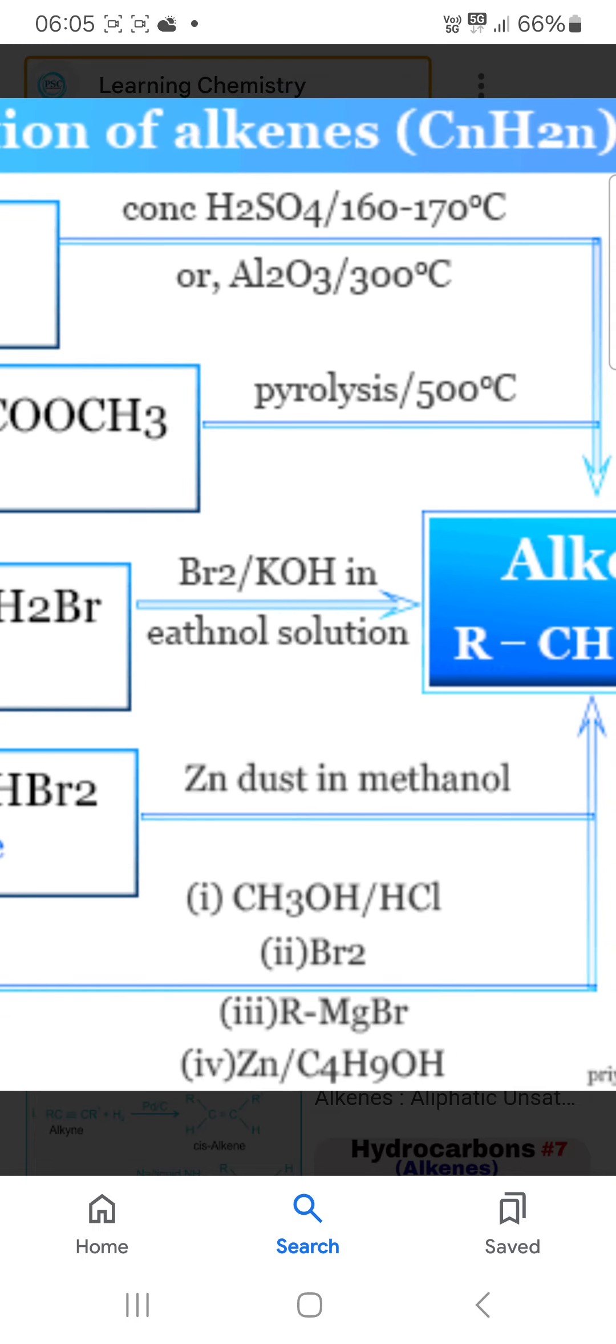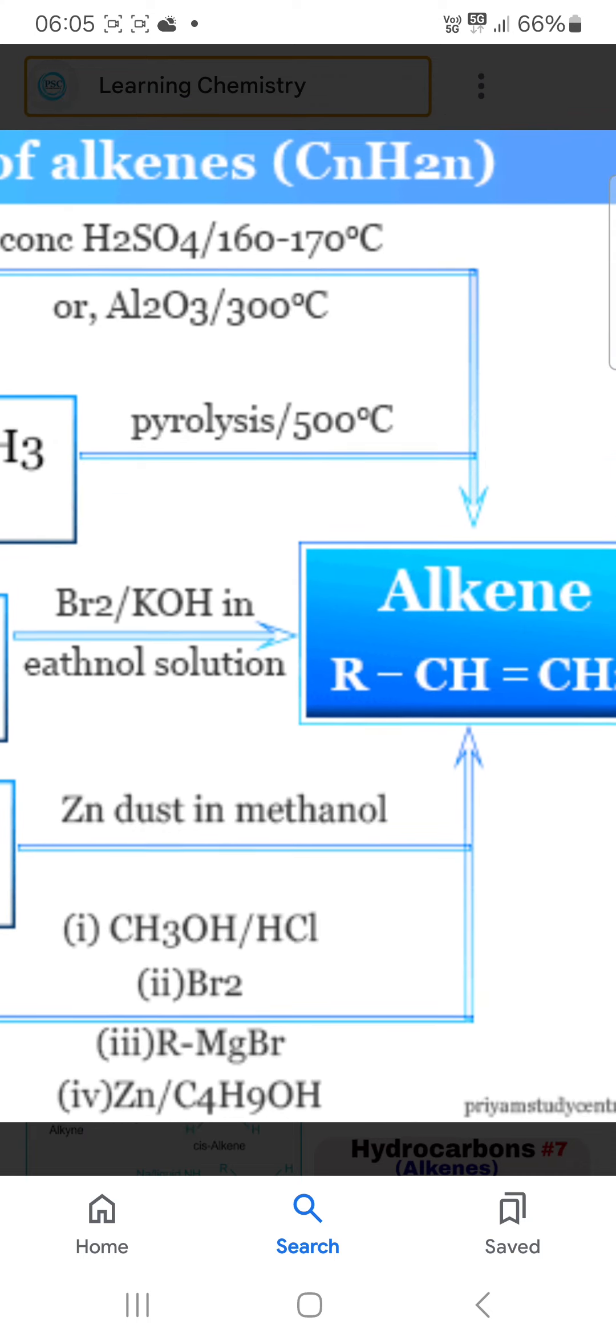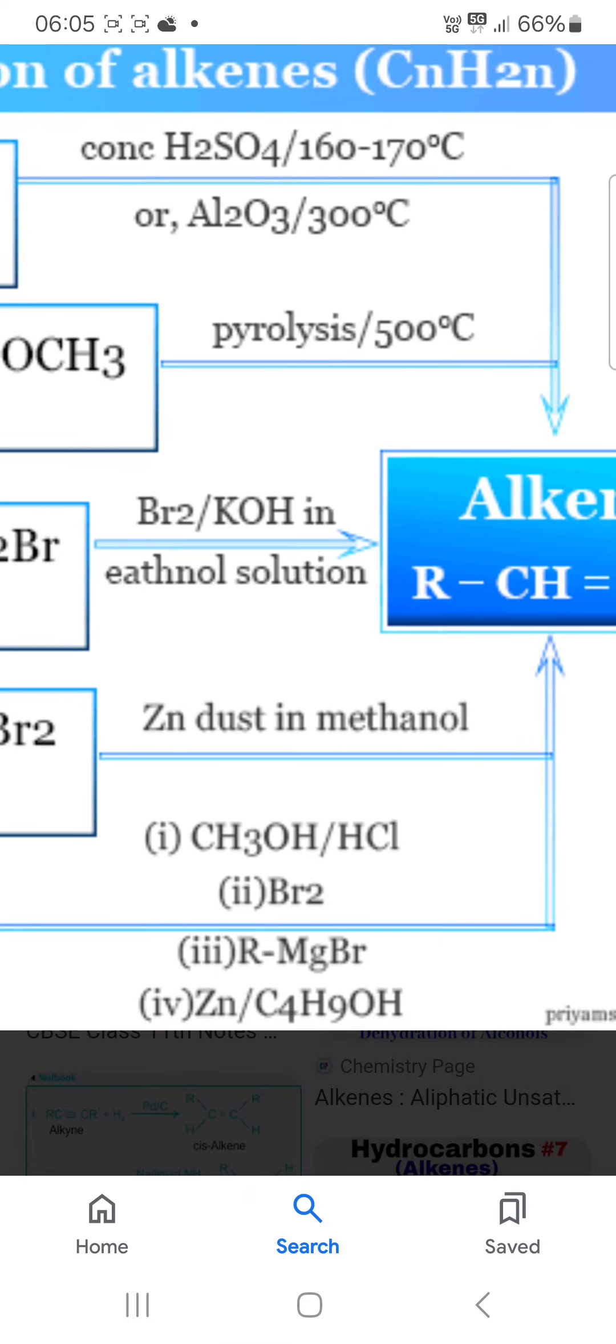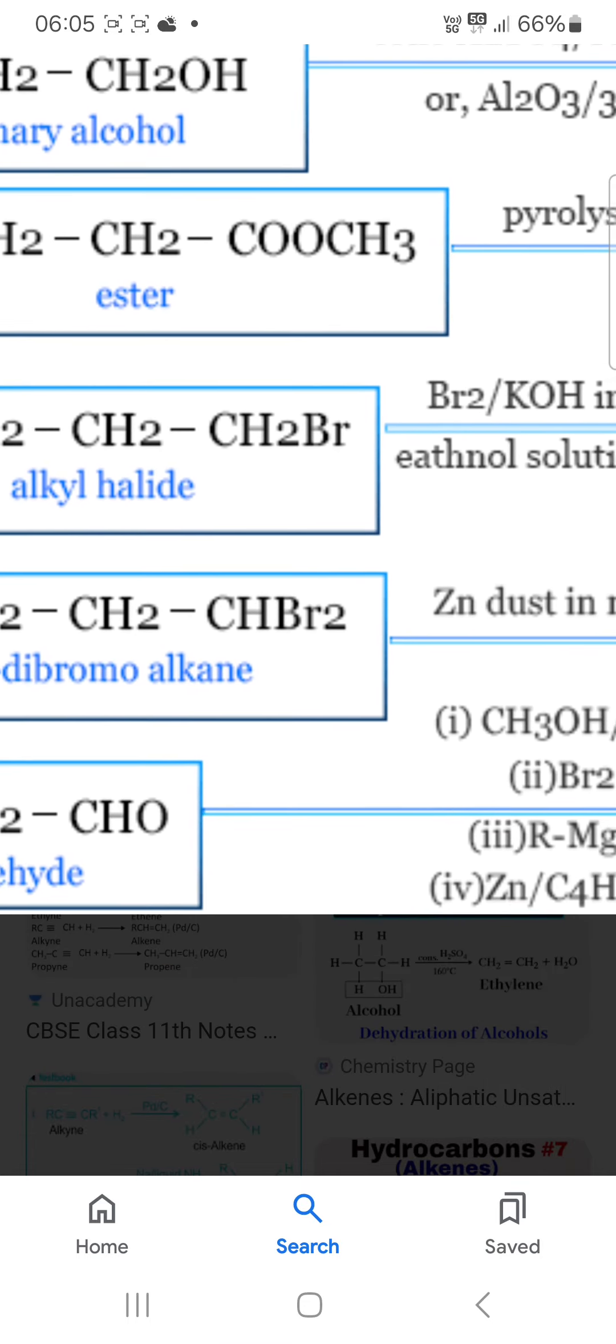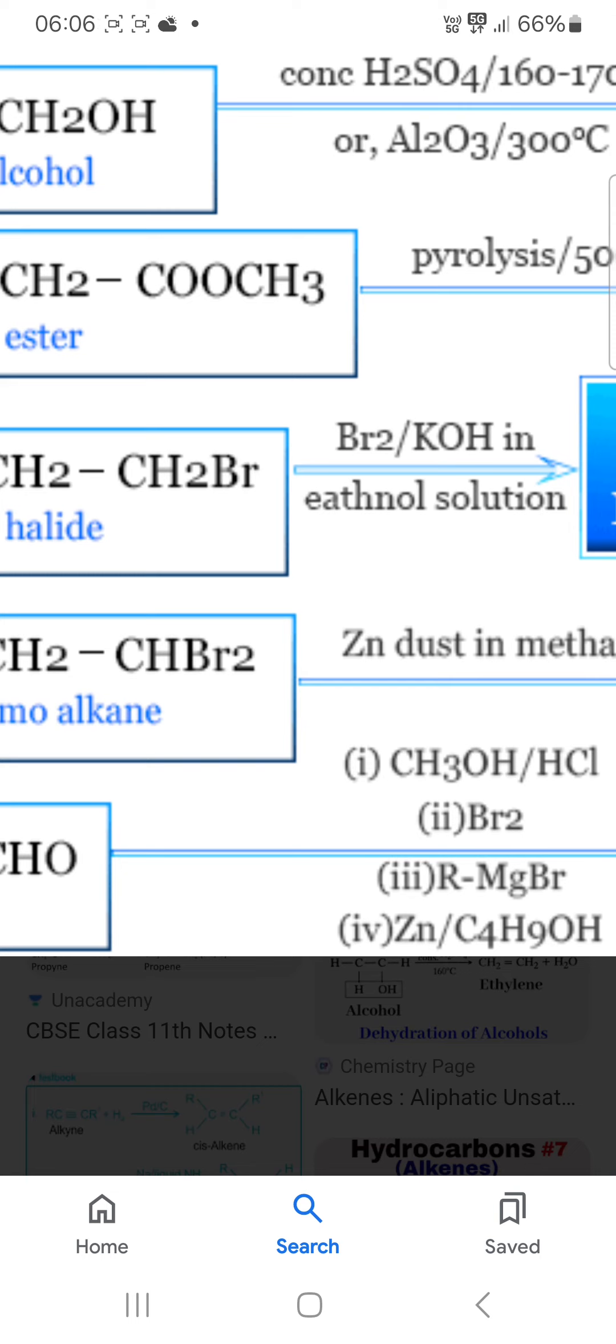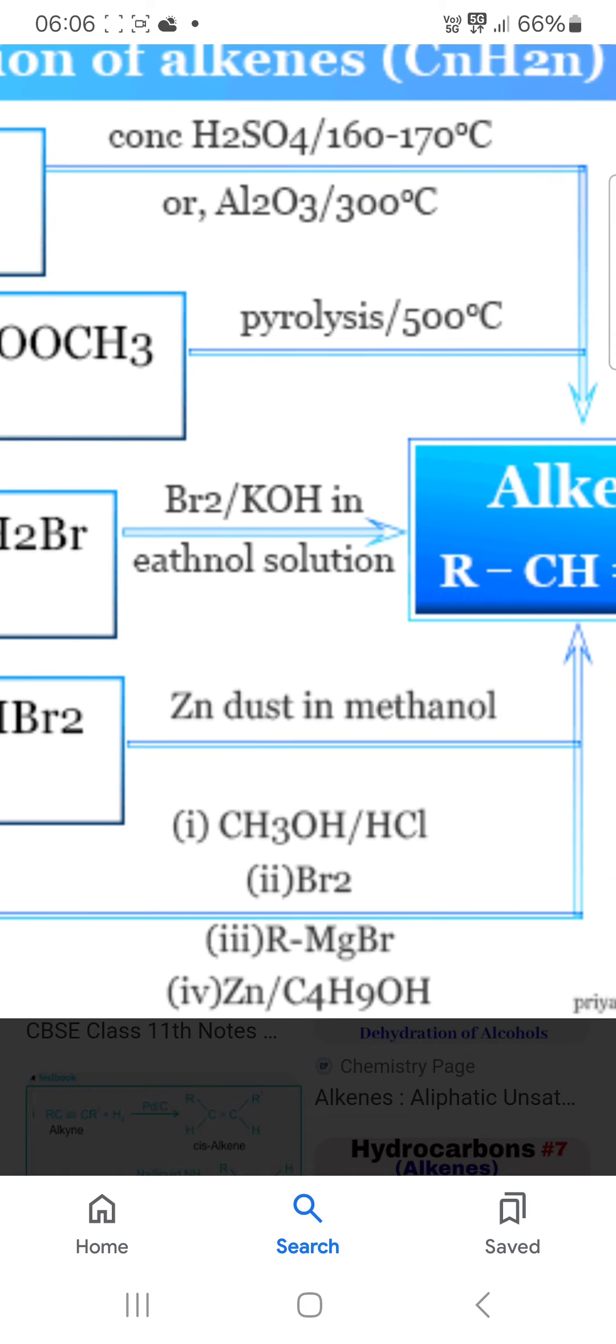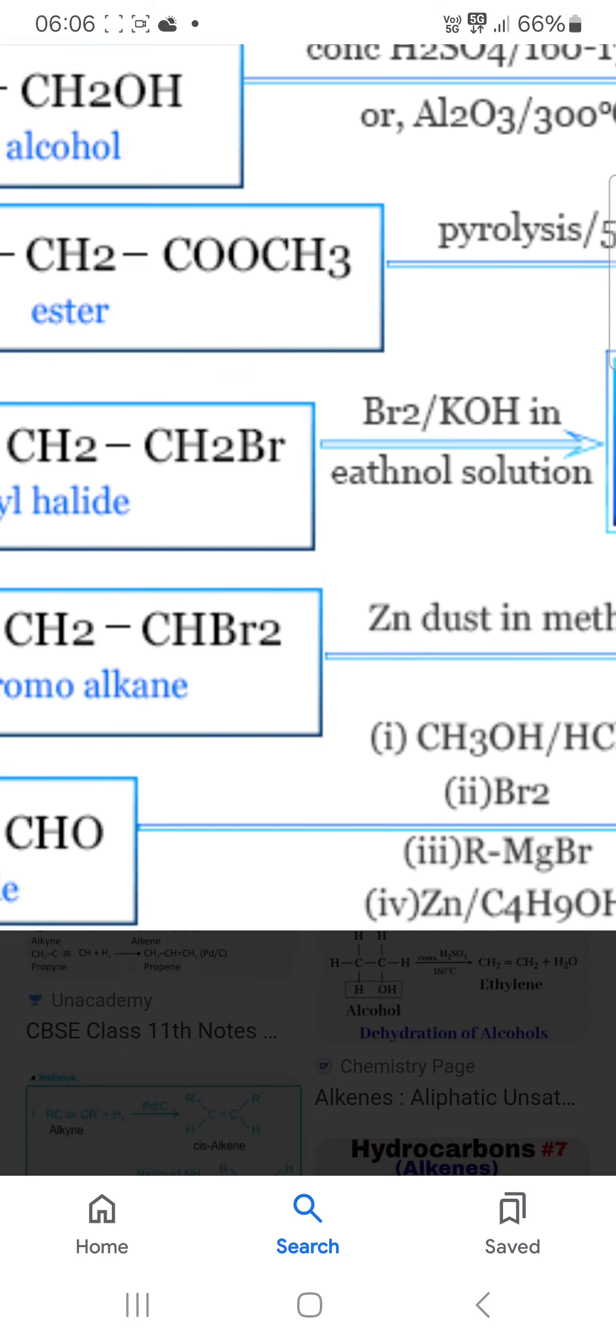Another route: alkyl halide. If you have alkyl halide, it undergoes dehydration with molecular bromine in basic conditions in ethanol solution, alkene is formed.